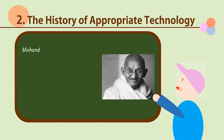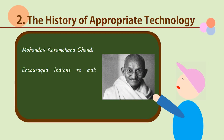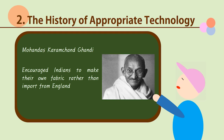Now, let's look at the history of Appropriate Technology. The idea of Appropriate Technology first appeared with Mohandas Gandhi. During the Industrial Revolution, low-cost fabrics from England flooded Indian markets. In response, Gandhi encouraged Indians to make their own fabric. This was the first widespread movement that represented the idea of Appropriate Technology.